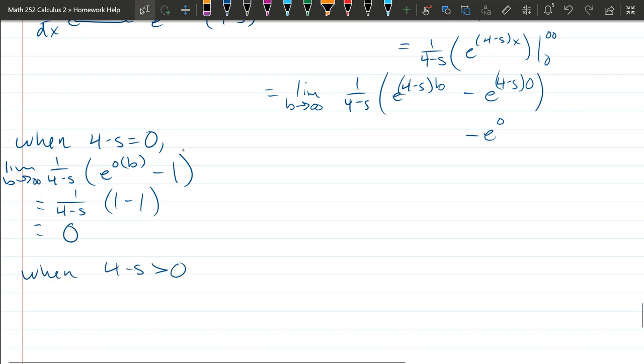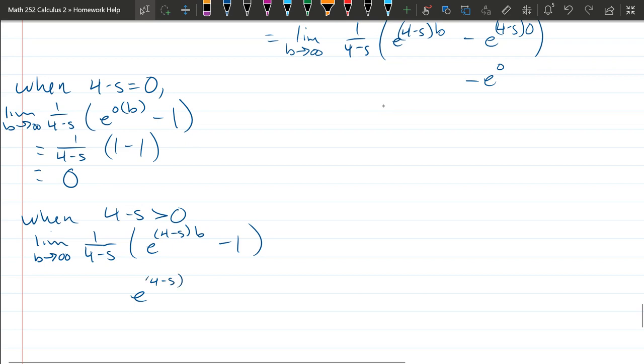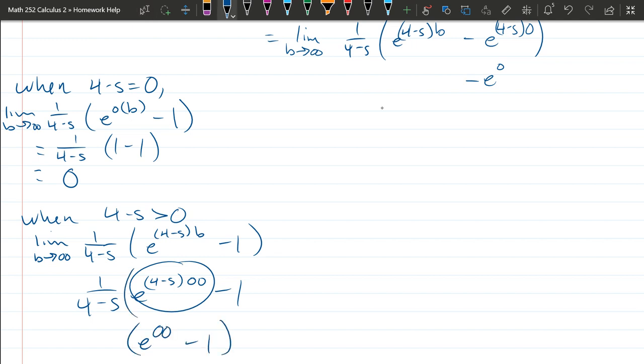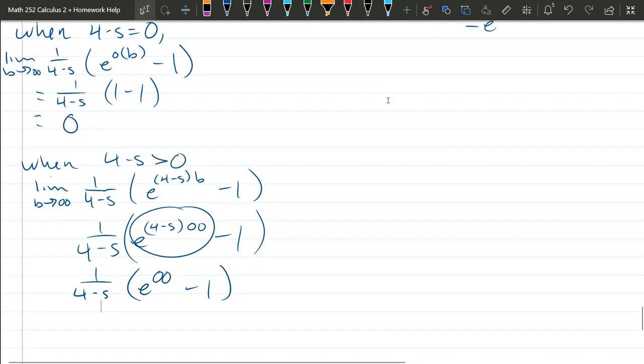When 4 minus s is greater than 0, what are we going to get? Limit B approaches infinity, 1 over 4 minus s, we have e to the (4 minus s) to the B power minus 1. All right, here is where knowing 4 minus s is positive is important. Because e to the (4 minus s) times infinity, this right here, 4 minus s is positive times positive infinity, that's e to the infinity minus 1, which is infinity, which is divergent.